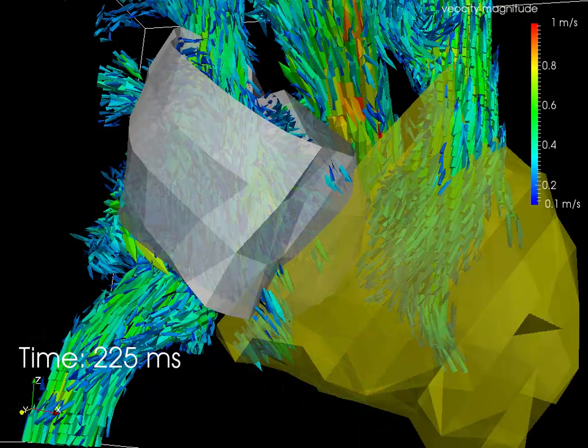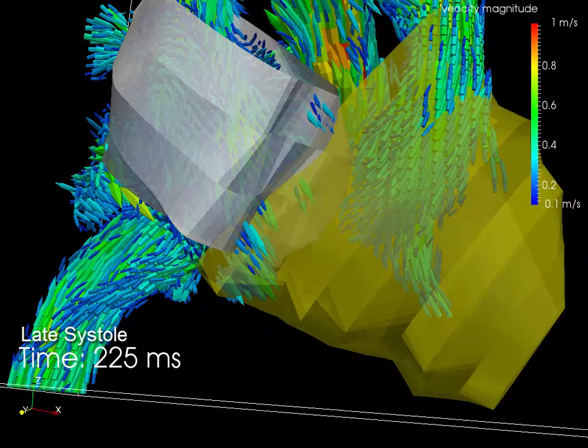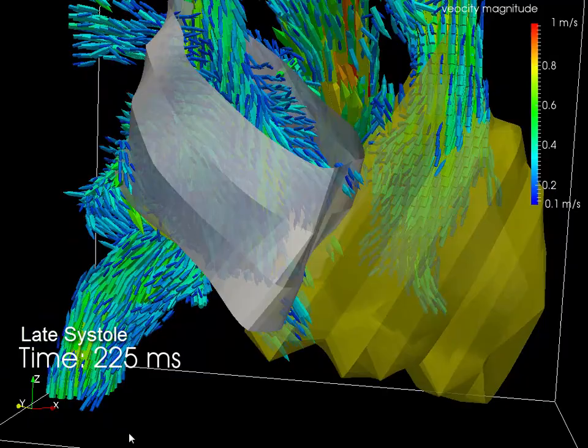We are going to focus on flow in the right heart. The atrium is in white and the right ventricle is in yellow.